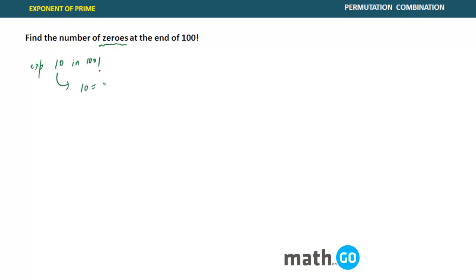This is now you people can actually solve. So 10 is obtained by getting 2 into 5. You have already obtained that 5 in 100 factorial is nothing but 24 times. We just did in the previous question. What will be 2?